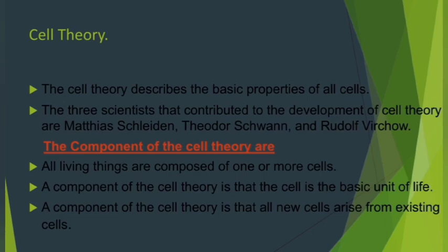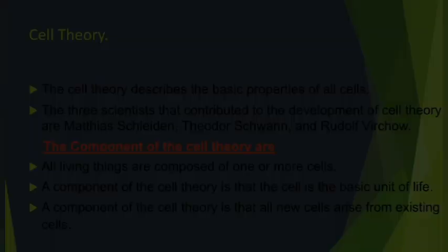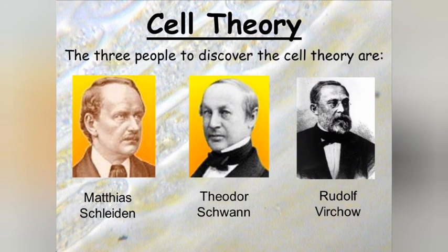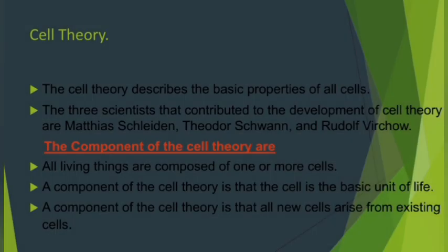Cells are the fundamental building blocks of all creatures, as well as the basic unit of reproduction. The three scientists that contributed to the development of cell theory are Matthias Schleiden, Theodore Schwann, and Rudolf Virchow. The cell theory is composed of three components.